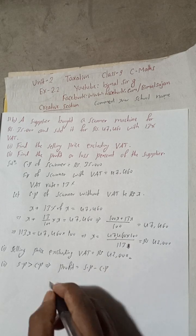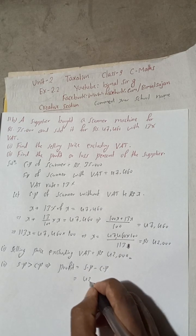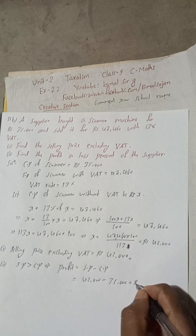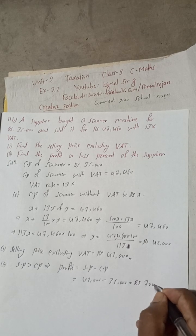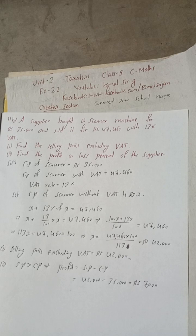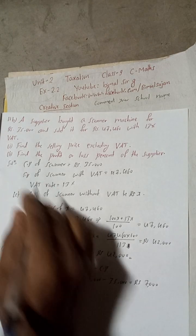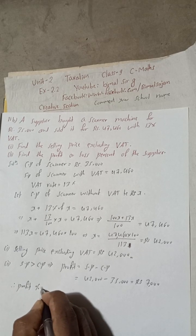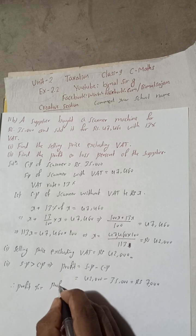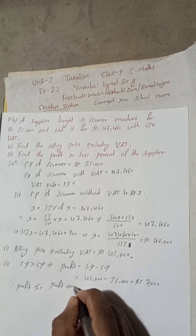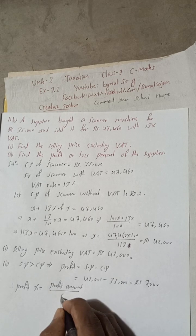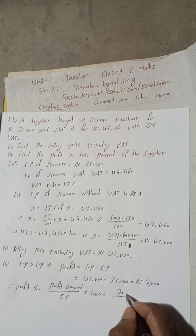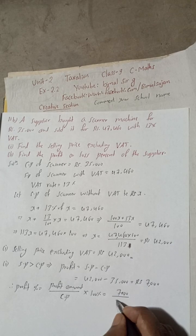So this profit is what? SP minus CP. So this is equal to, SP we have to take this 42,000 minus CP 35,000. This is equal to Rs. 7,000. Now we can find this profit percent. Therefore profit percent is equal to here.